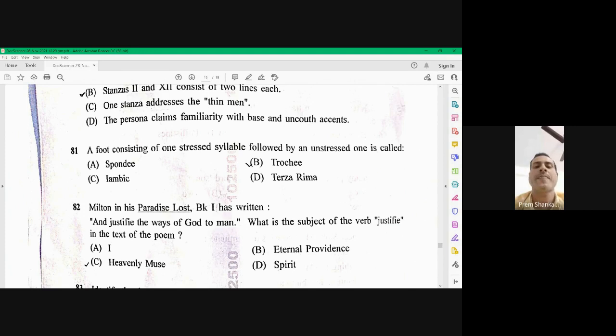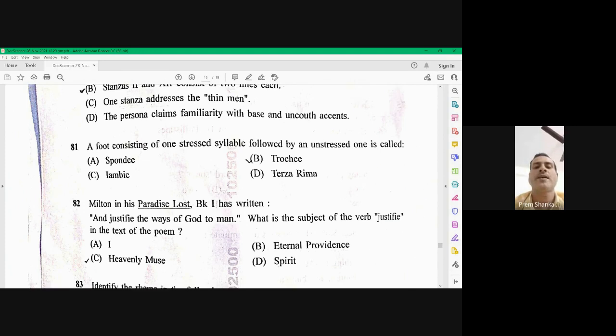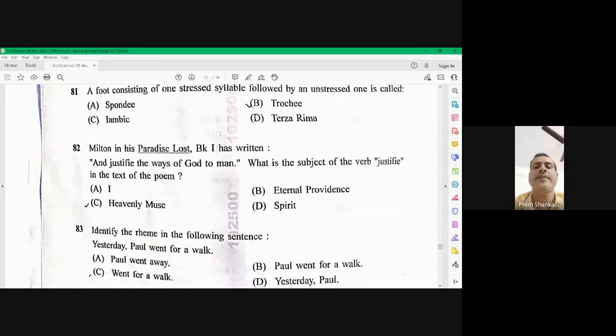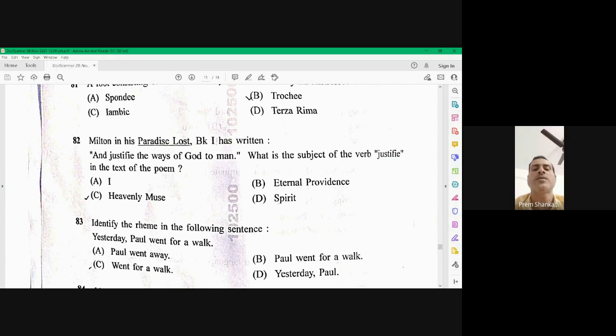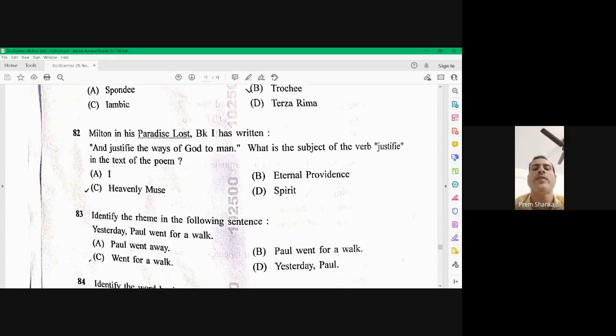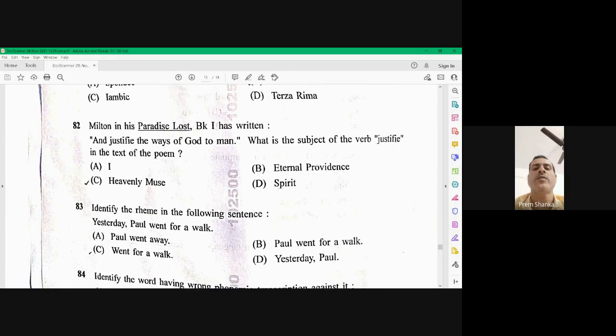Question number 83. Question number 83. Identify the Reem in the following sentence. What is Reem? Reem is anything that talks about the theme of a particular clause. So here there are two clauses yesterday and Paul went for a walk. So went for a walk is the main theme for the clause. Paul went for a walk. So C is the right option. Went for a walk.